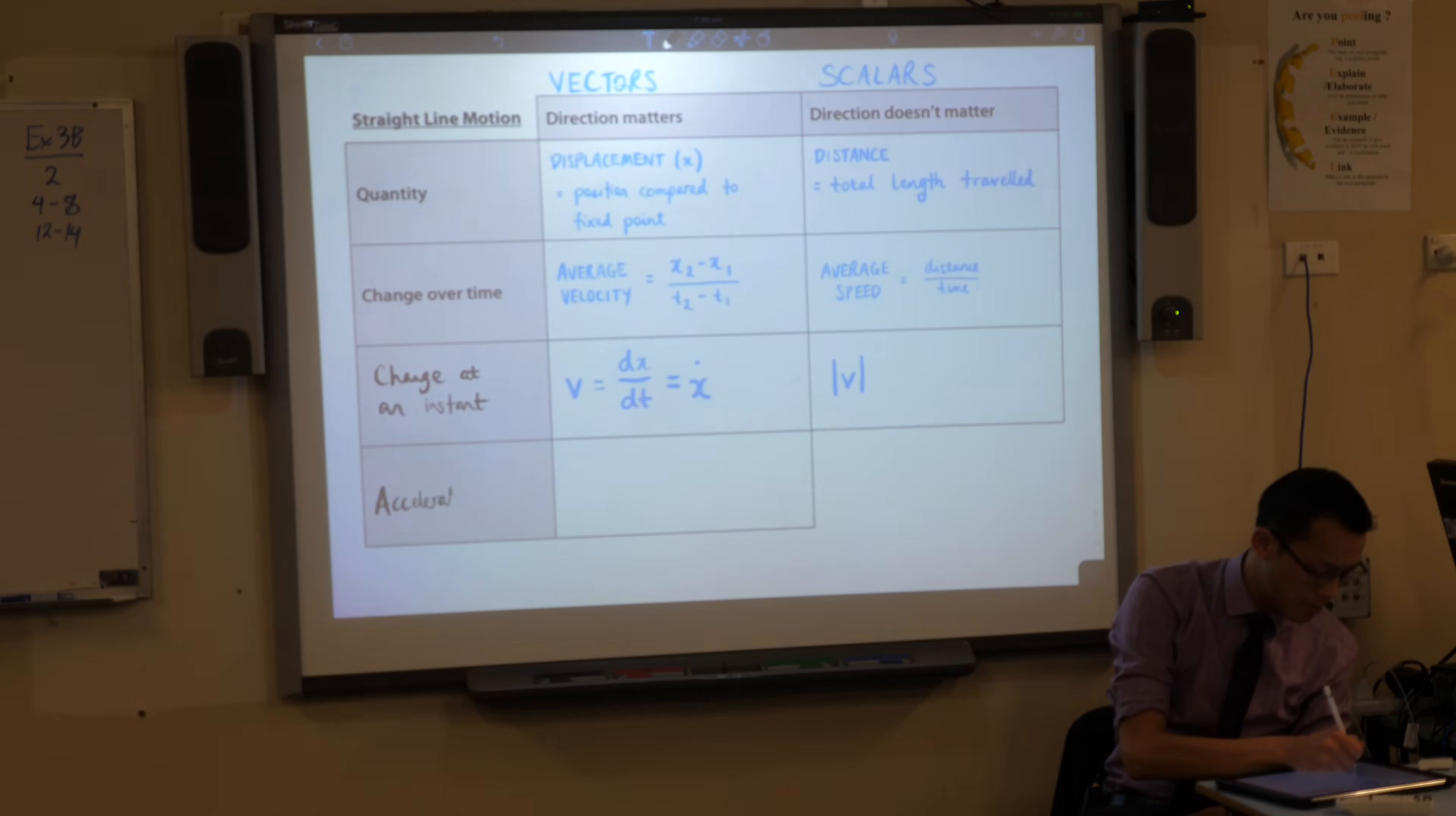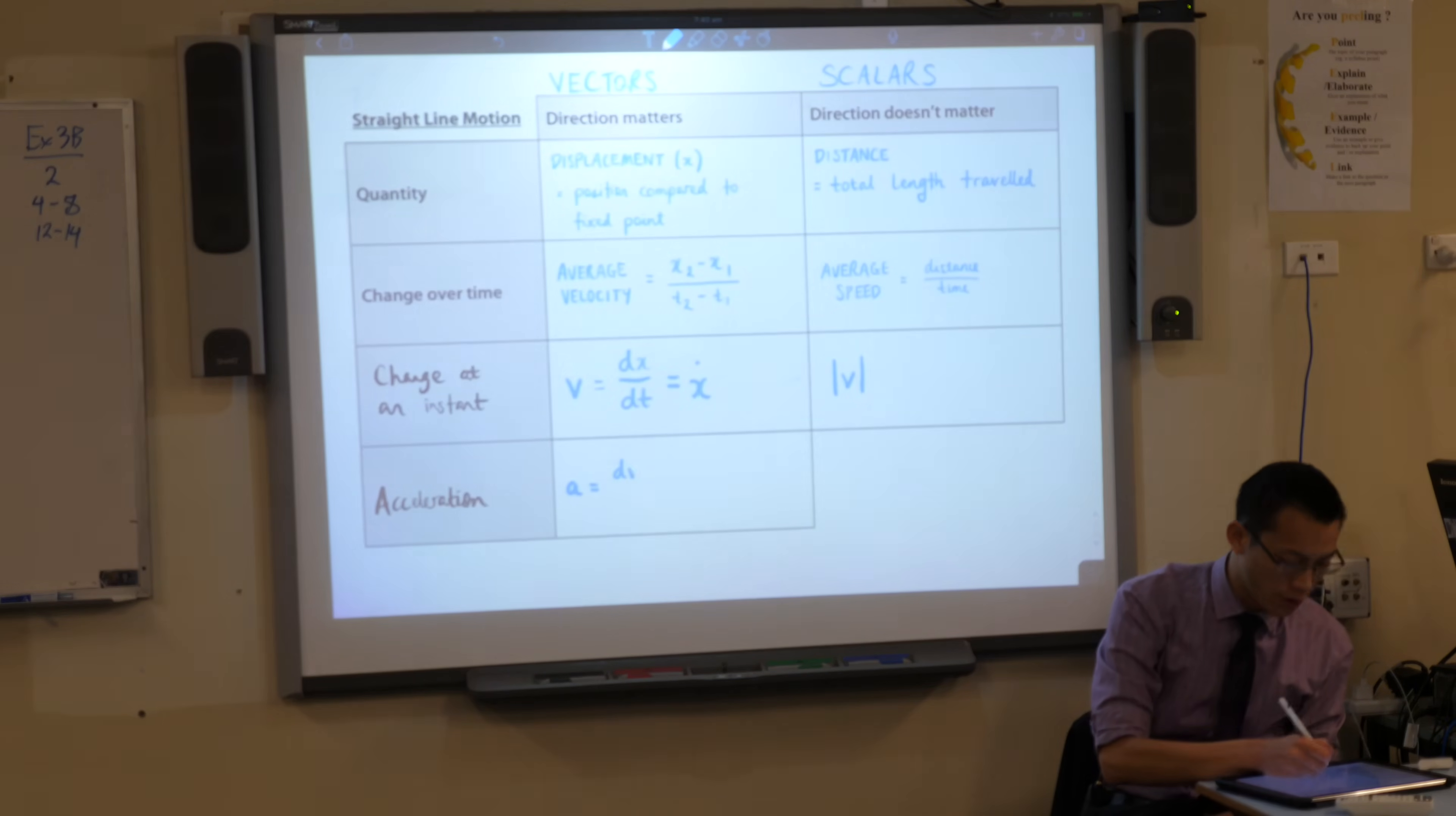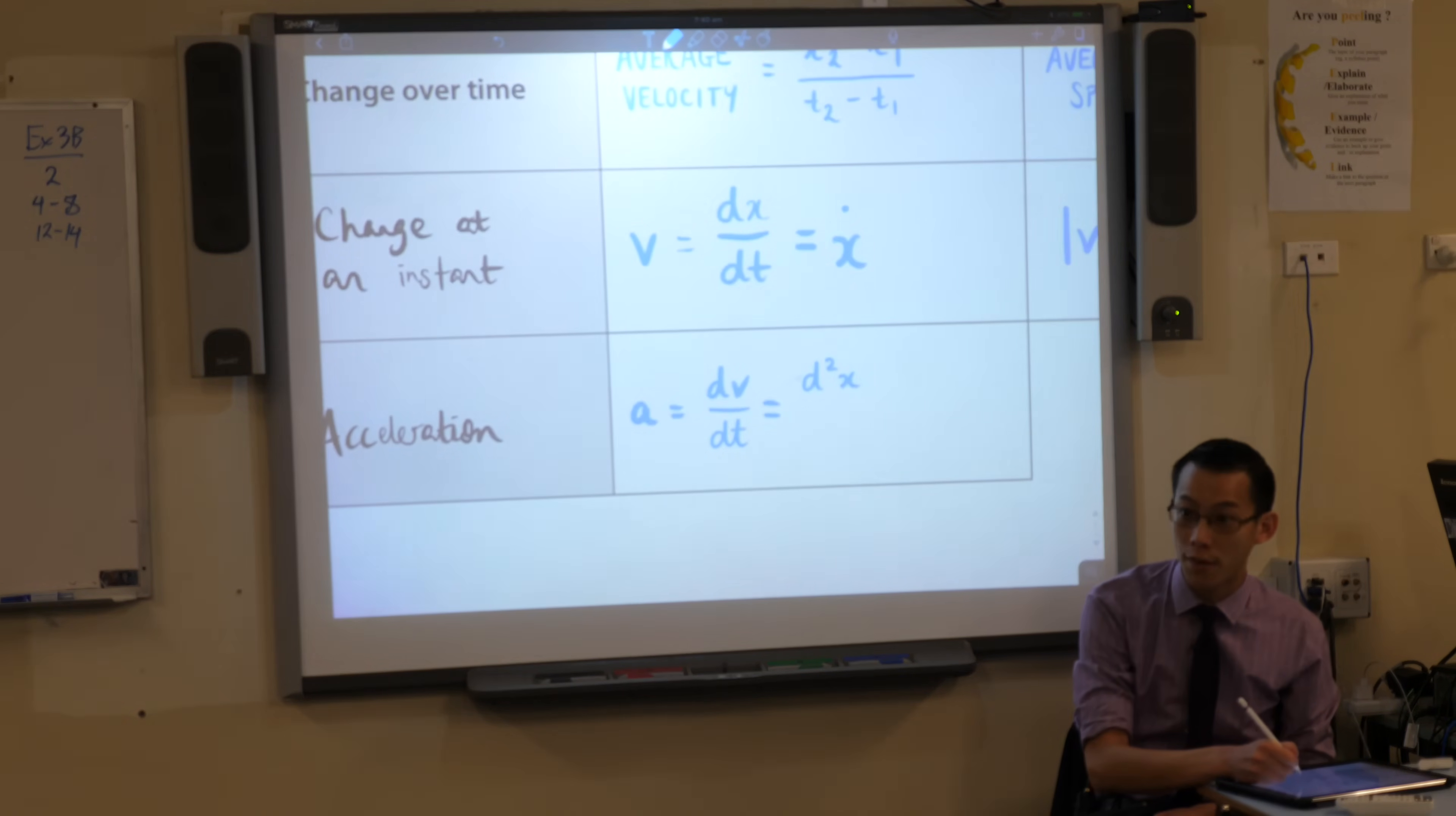Now just like velocity above, acceleration a gets lots of different ways to describe it. First, by definition, acceleration is the change in velocity over time. That's dv/dt. But since v itself is also a derivative, if you differentiate that again, I can say that actually acceleration is not just the derivative of velocity, it's also the second derivative of displacement.